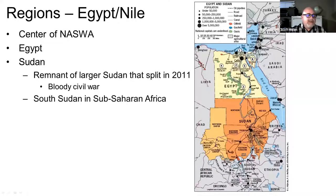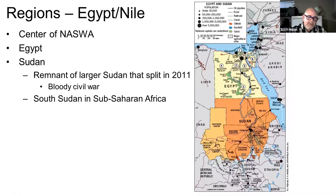A few notes on Egypt and the Nile River Valley — this is right in the central part of the realm, including Egypt and Sudan. Sudan used to be a larger country. It included what is now South Sudan, but a bloody civil war resulted in a split in 2011 into two separate countries: Sudan and South Sudan. South Sudan is really more part of Sub-Saharan Africa, so it will be included in a different chapter.